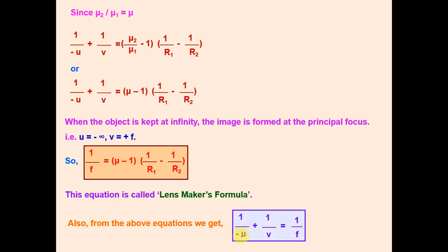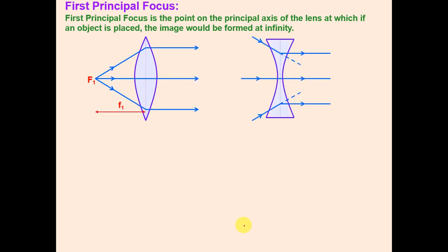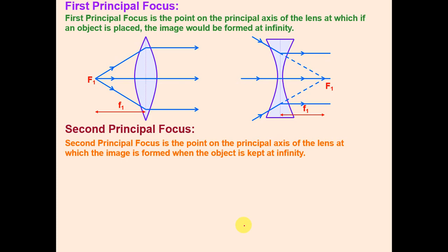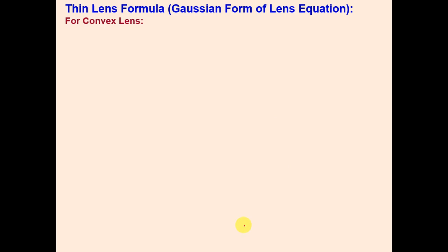From these two relations we also get the lens equation: 1/v − 1/u = 1/f. The first principal focus is the point on the principal axis such that if the object is placed there, the image forms at infinity. The second principal focus (f2) is the point where the image is formed when the object is at infinity.